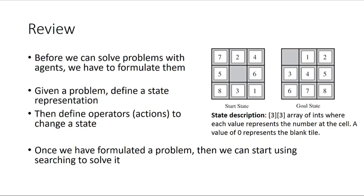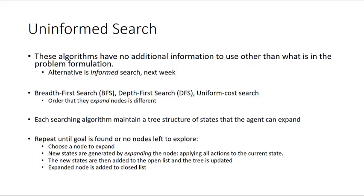There are a lot of different searching algorithms. The first class we're going to talk about are uninformed search algorithms. Uninformed search algorithms use no additional information other than what is described in the problem formulation. The alternative is informed search, which we'll cover next time. A few of these algorithms are breadth-first search, depth-first search, and uniform cost search. The way they differ is mostly in how they expand the nodes.